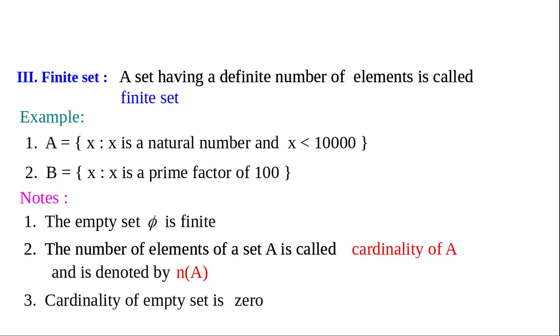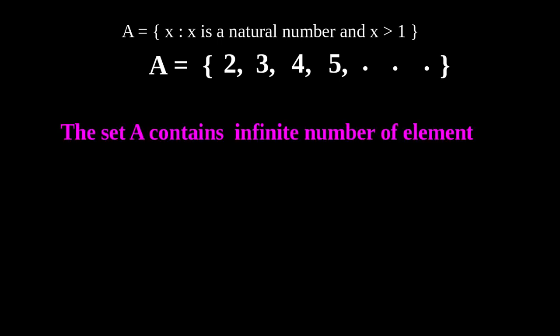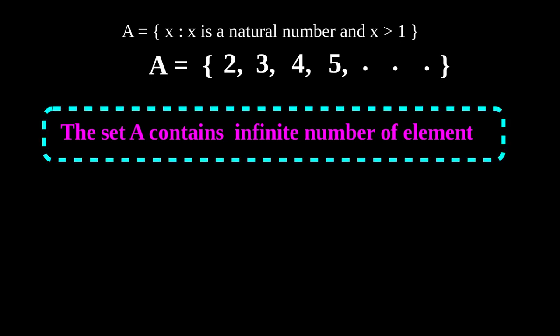Now the fourth type. Example: A equals the set of all x such that x is a natural number and x greater than 1. In roster form, A = {2, 3, 4, 5, ...}. There is no largest number satisfying this condition — we cannot count the number of elements in set A. Set A contains infinitely many elements.